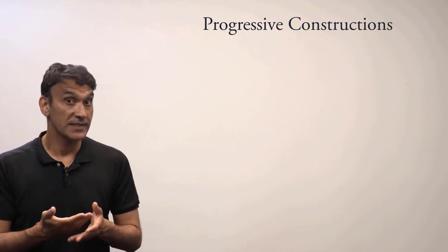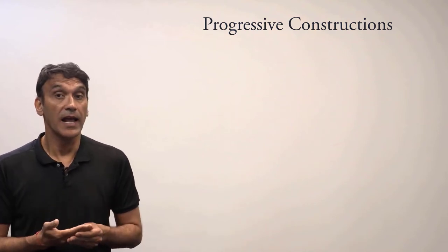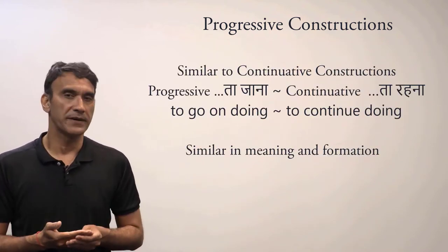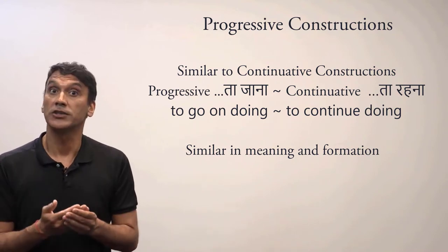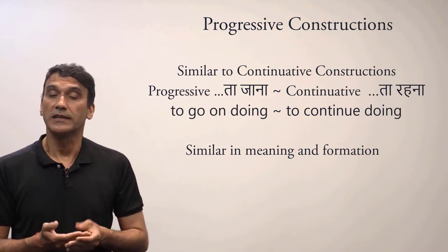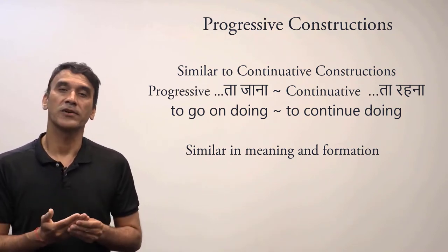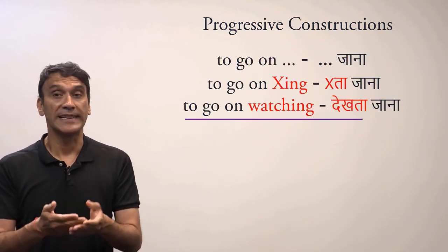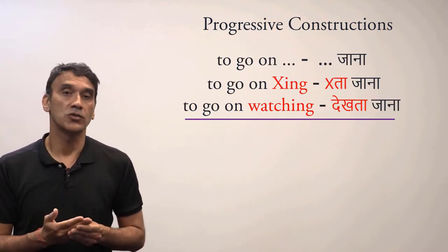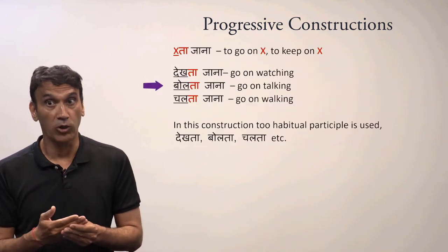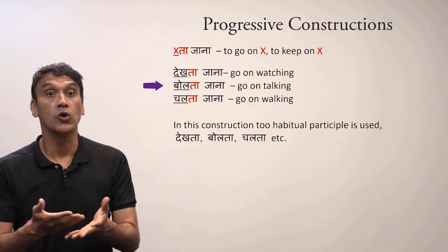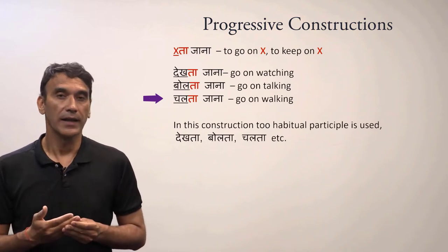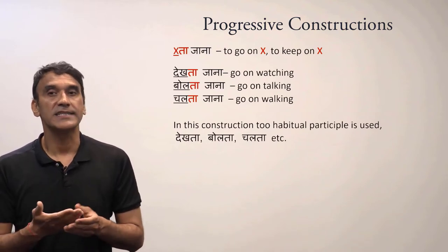The next grammar point is progressive constructions. These constructions are very similar to the continuative constructions we took in the previous grammar point. The translation of the progressive construction is 'to go on doing something.' For example: dekta jana - to go on watching, bolta jana - to go on talking, chalta jana - to go on walking.